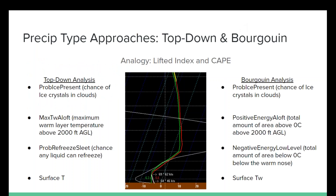I want to talk about the current precipitation type approaches in forecast builder — specifically the top-down and Burgoyne techniques. The eastern portion of the central region is doing some testing with the Burgoyne technique. The difference between top-down and Burgoyne is similar to the analogy of lifted index and CAPE. Both are basically a form of top-down and both require a probe ice present, which is the chance of ice crystals in the clouds. Without those ice crystals, all other parameters below won't matter and you'll just end up with supercooled drops.